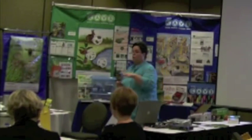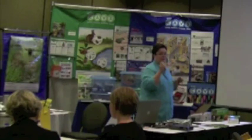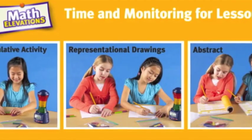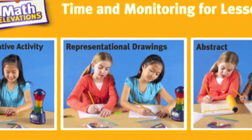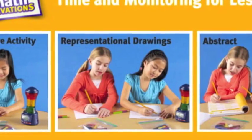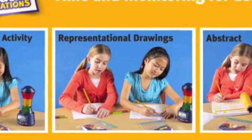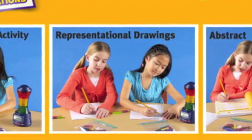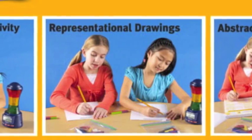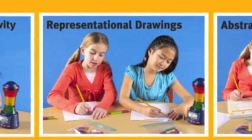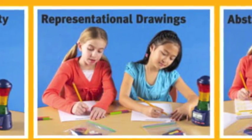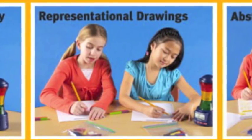After they're comfortable with that — after you feel like they've got this with the manipulatives — then we're going to go to the representational. There we're using the manipulatives but also using paper and pencil. I may say, draw me an array of two by seven. They can go and take the manipulatives, build it if they need to, if they still need that inner support, that little scaffold, and then they can draw it on their paper.